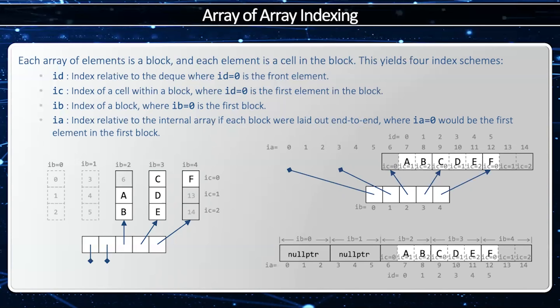12 refer to deque index 0, 1, 2, 3, 4, 5. And then array index 13 and 14 are not currently utilized.